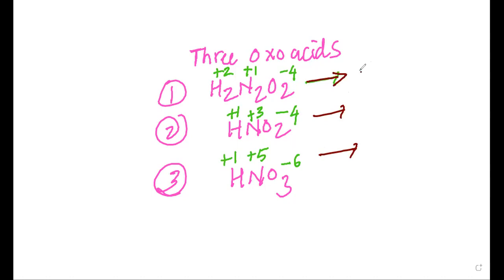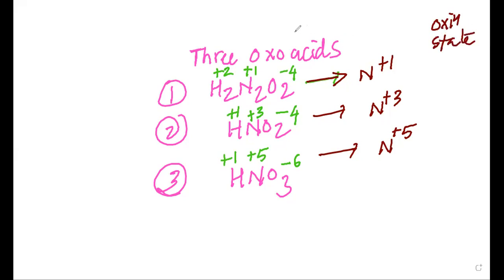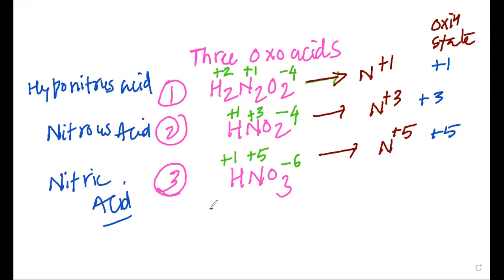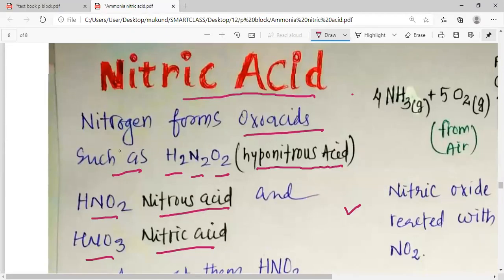In H2N2O2, nitrogen is available as plus 1; in HNO2, nitrogen is available as plus 3; and in HNO3, nitrogen is available as plus 5 oxidation state. These are known respectively as hyponitrous acid, nitrous acid, and nitric acid. We are going to study about nitric acid in detail now, so let's move forward. Amongst these oxoacids, HNO3 nitric acid is the most important.